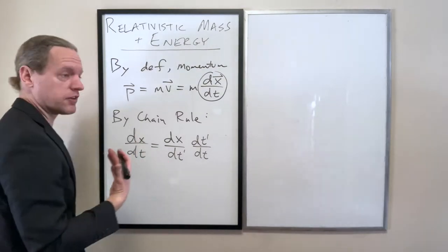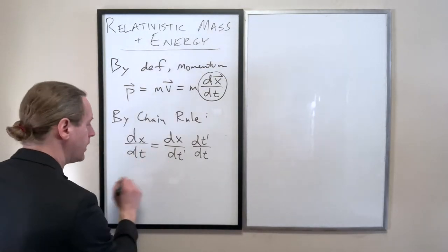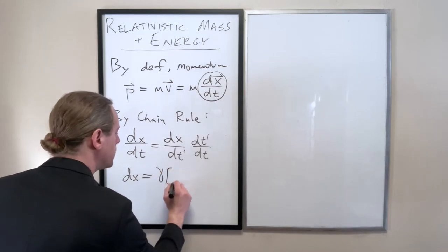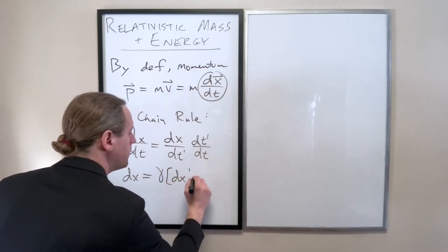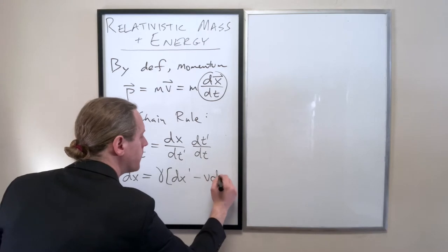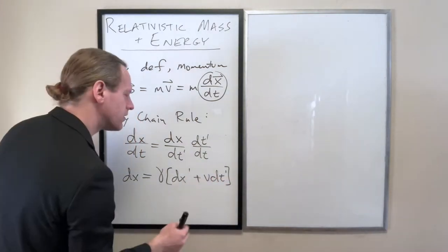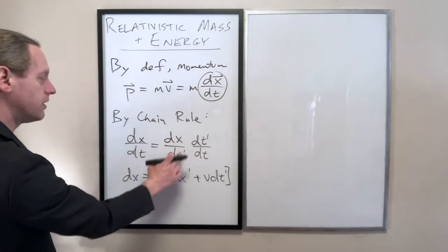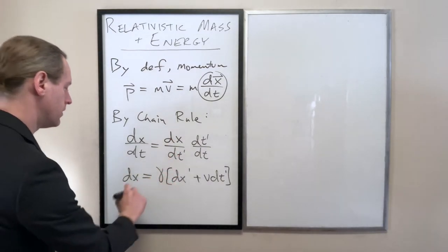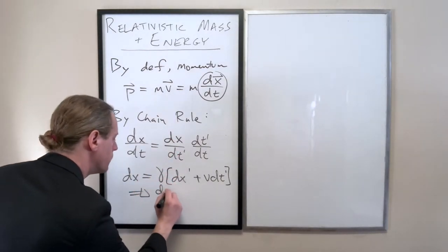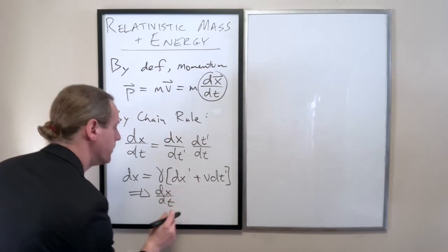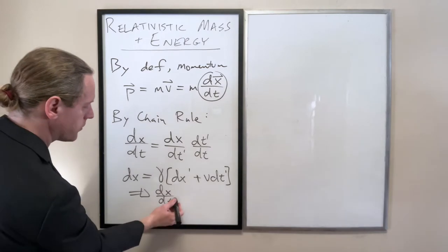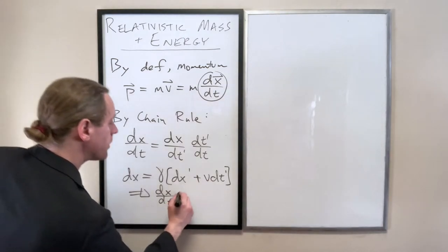And now if we think about the Lorentz transformations, we know that dx equals gamma dx prime minus V dt prime. So let's go with the plus there. So dx dt prime, when you take dx dt prime, the derivative of this with respect to T prime, sorry, that's just gamma V.